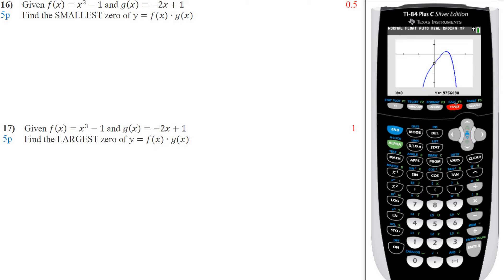So now we zoom in. We do 2nd trace. We do 0. So number 2. And you follow your prompts. Left bound, right bound, guess. There you go. 0.5 is the x value. So that's my smallest 0. Then I do the same one for over here. And that should also get me my largest value, which is 1.